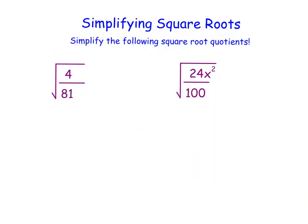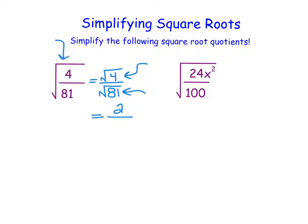Let's do a couple more examples. Again, I notice that I have a fraction underneath a square root, so I can split it up into the square root of the numerator divided by the square root of the denominator. I simplify them one at a time. The square root of 4 is a perfect square, so that's 2. The square root of 81 is also a perfect square, and the square root of 81 is 9. So my final answer is as simple as 2 divided by 9.